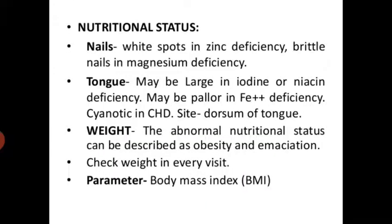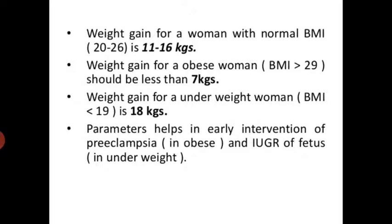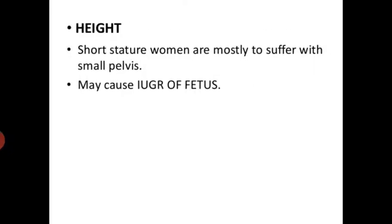Temperature may rise by 0.4°F — from 98.6°F to 99°F — due to increased metabolic rate. Nutritional status: white spots on nails indicate zinc deficiency; brittle nails indicate magnesium deficiency. The tongue may be large in iodine or niacin deficiency, pallor indicates iron deficiency, cyanosis indicates congestive heart failure. Abnormal nutrition status is described as obesity or emaciation. Check weight at every visit. Weight gain for women with normal BMI is 11–16 kg; for obese women, less than 7 kg; for underweight women, 18 kg. These parameters help in early intervention of preeclampsia in obese women and IUGR of fetus in underweight women. Short stature women are more likely to suffer with a small pelvis and may cause IUGR of fetus.